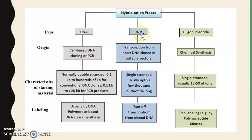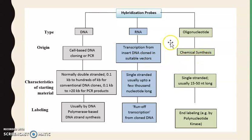DNA probes can be synthesized by cell-based DNA cloning or PCR methods, while RNA probes can be synthesized by transcription from insert DNA cloned in suitable vectors, and oligonucleotides can be synthesized by chemical methods. The length of DNA probes varies from 0.1 kb to hundreds of kb, but in PCR products they are typically greater than 20 kb.